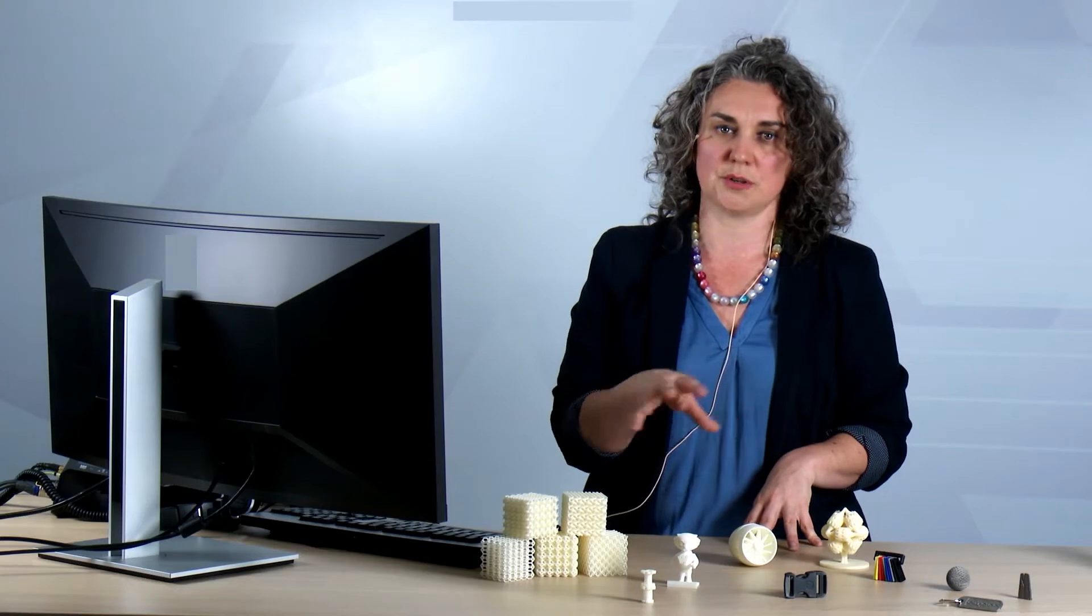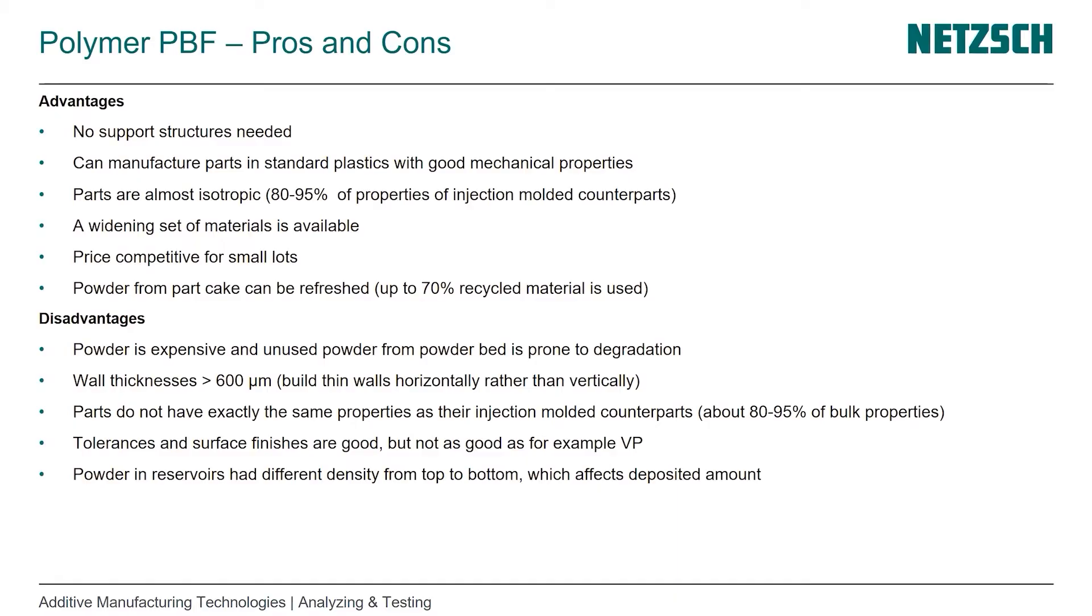It can manufacture parts in standard plastics with good mechanical properties. It's not that all thermoplastics and semi-crystalline polymers in the world can be used, but it's a good variety of technical thermoplastics. So it can be used for structural parts with a variety of materials to choose from.